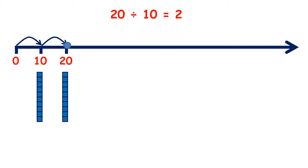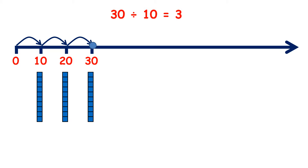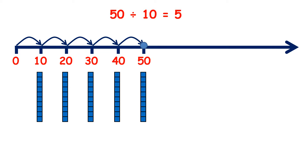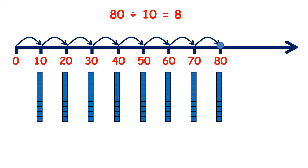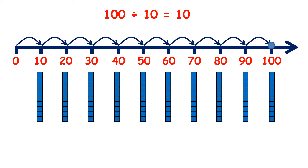So if we have 20, we can make 2 lines of 10. 30 divided by 10 is 3, so if we have 30, we can make 3 lines of 10. 40 divided by 10 is 4. 50 divided by 10 is 5. 60 divided by 10 is 6. 70 divided by 10 is 7. 80 divided by 10 is 8. 90 divided by 10 is 9. 100 divided by 10 is 10.